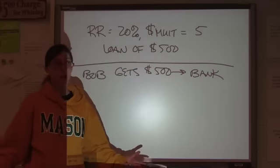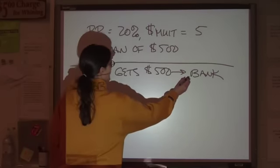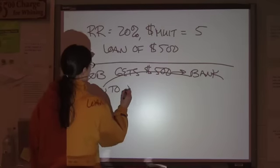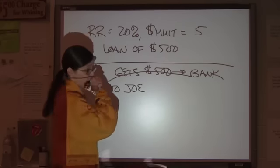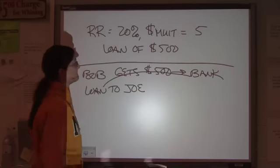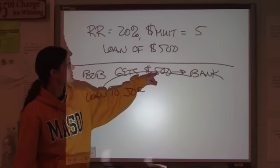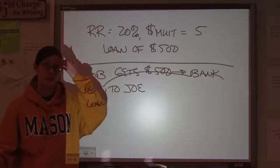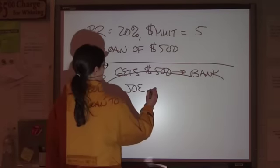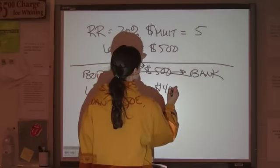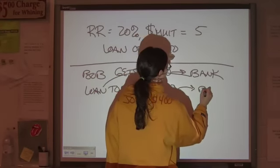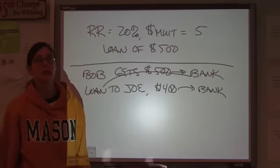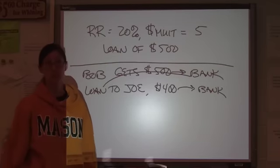So, Bob's bank has $500. Now, that bank makes a loan to Joe, our other average consumer. Now, what can that bank loan out if the reserve requirement is 20%? $400 is what they have left over. And he puts that in his bank.